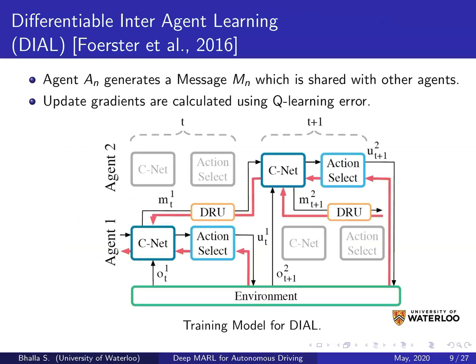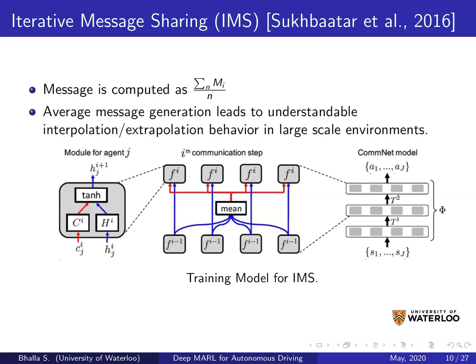The first communication-based algorithm is Dial. In Dial, multiple agents train in parallel in a single environment and share discrete messages with each other. The messages are trained by passing back continuous gradients from one agent to the other, calculated by computing the residual gradients based on the message input from the speaker agent. Similarly, in Iterative Message Sharing (IMS), back propagation is used to train the messages shared between agents, except an averaging function is applied before the messages are broadcast back to the agents.